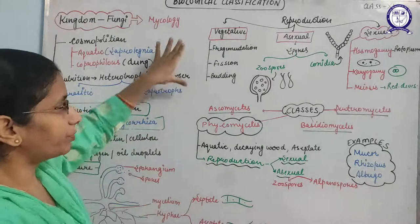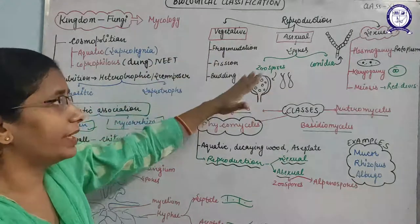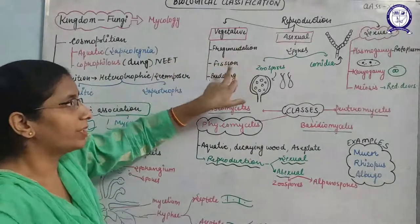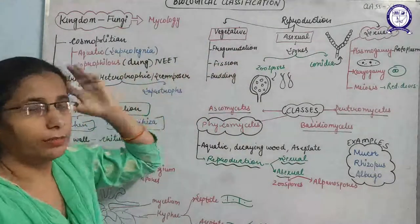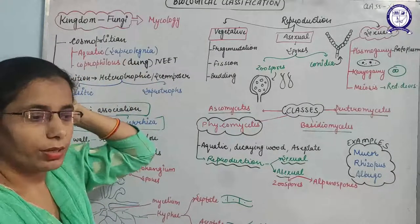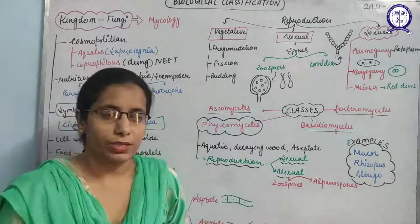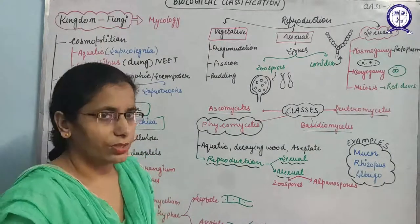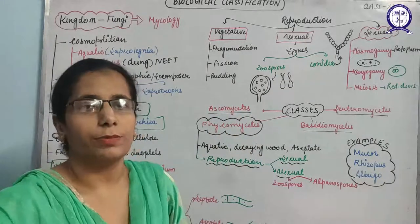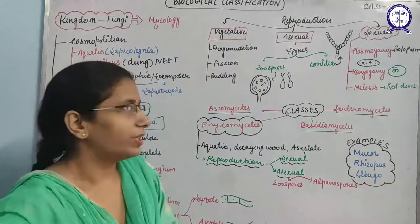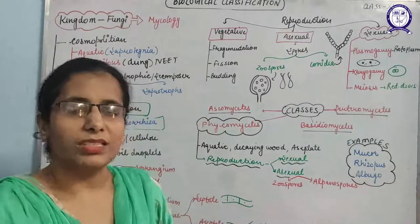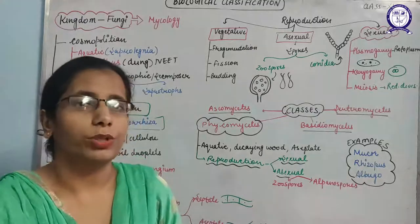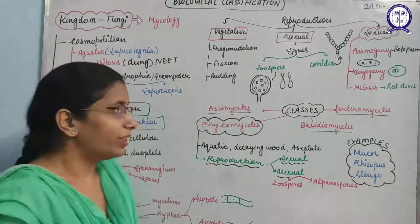To summarize reproduction: vegetative reproduction takes place by fragmentation — where a part of the organism breaks into fragments that act as individual organisms; fission — binary or multiple fission; and budding — where an outgrowth-like structure appears on the body of an organism.